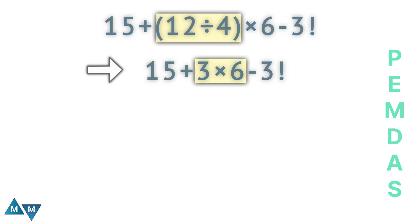Now we have 15 plus 18 minus 3 factorial. Addition and subtraction both have the same priority, so the expression will be solved from left to right. 15 plus 18 equals 33.